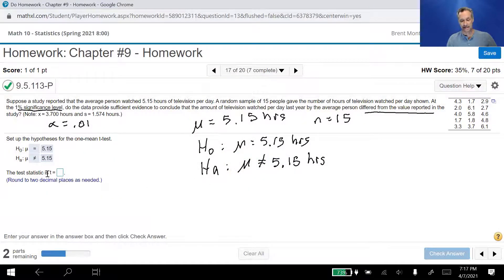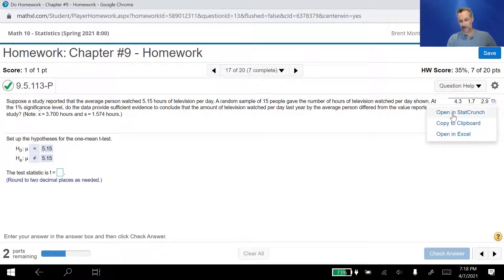It says find the T statistic. The reason we're finding the T statistic and not the Z statistic is we don't have the population standard deviation, sigma. If we had sigma, we would use a Z test. Since we don't, we use a T test. Let me go ahead and erase all this stuff. I'm going to open up the data over here. Click on this little symbol, open it in StatCrunch.